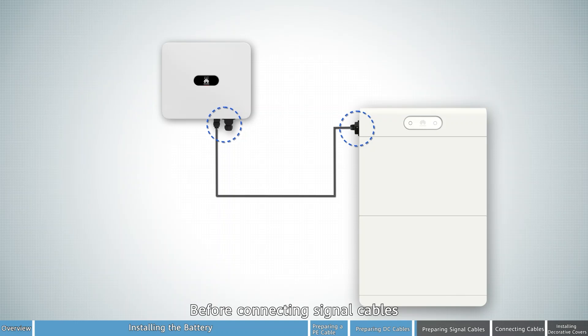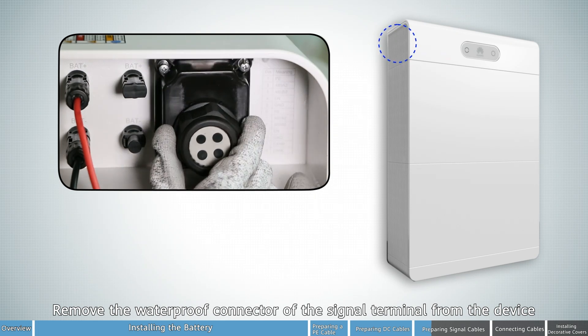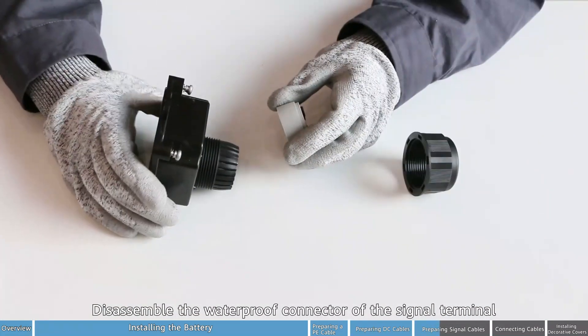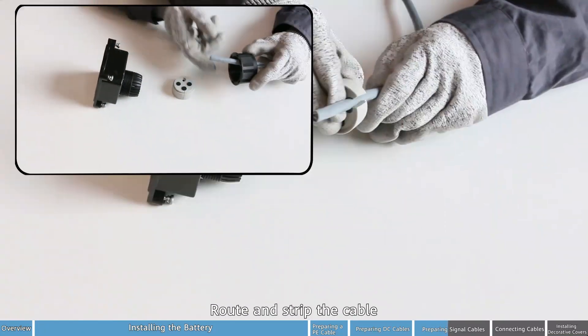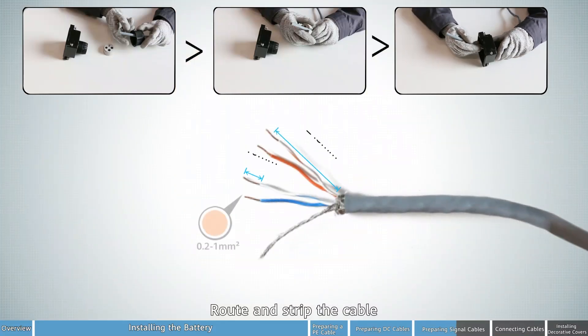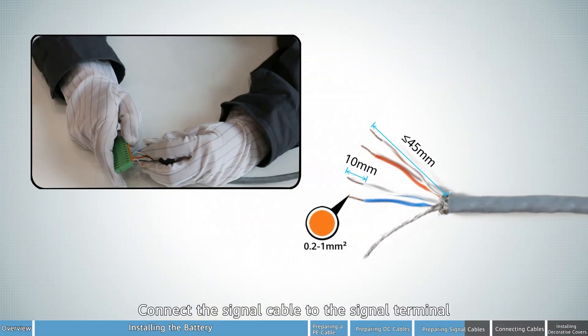Before connecting signal cables, let's see how to prepare the signal terminal. Remove the waterproof connector of the signal terminal from the device. Disassemble the waterproof connector of the signal terminal. Route and strip the cable. Connect the signal cable to the signal terminal.